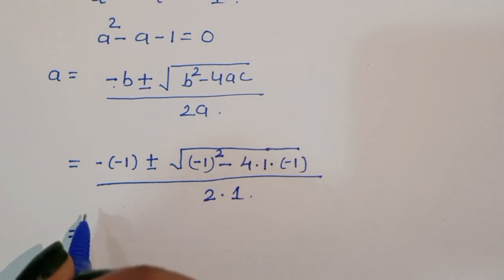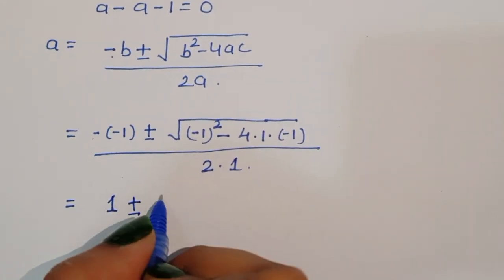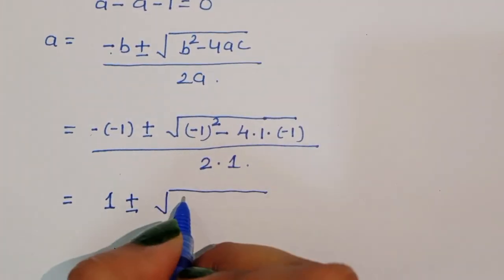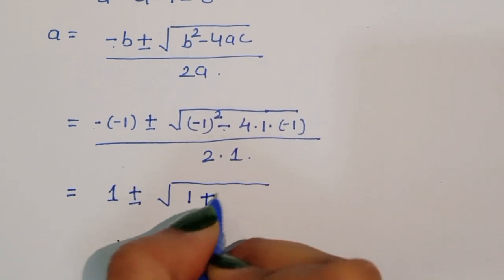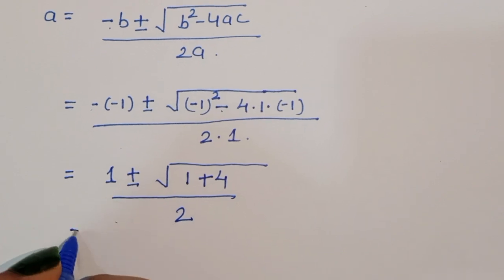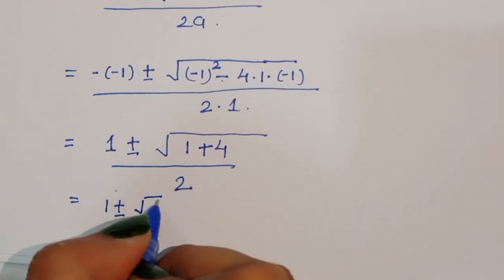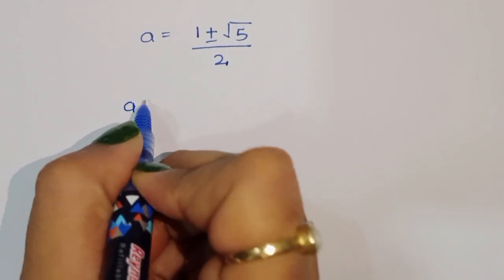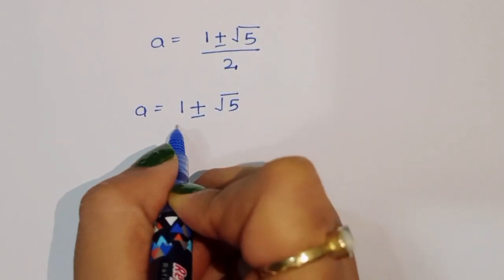This equals 1 ± √(1 + 4) divided by 2, which simplifies to a = (1 ± √5) / 2.